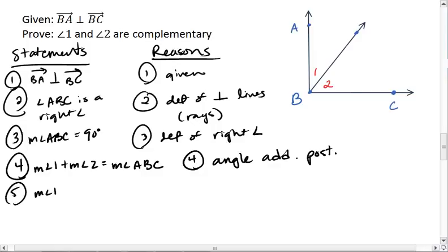We then know that the measure of angle 1 plus measure of angle 2 equals 90 degrees. And that's by substitution, which tells us